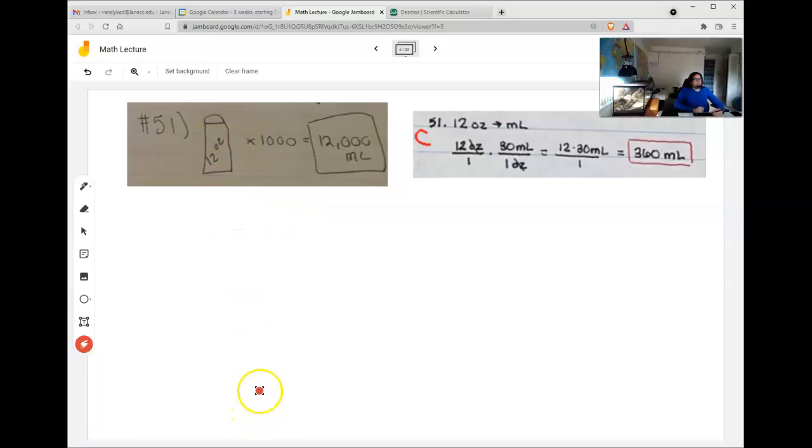This one, you started right but had the wrong conversion factor. We're trying to go from ounces to milliliters. But it's not true that there's a thousand as the conversion rate. So how would we do this? A sample student did it one way. To start with 12 ounces. We know that one ounce is 30 milliliters because the textbook tells us that. And then the ounces will cancel.